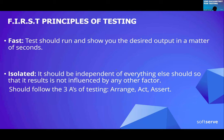Let's take a look at the first principles of testing — there are five. The first is Fast: tests should run and show you the desired output in a matter of seconds. Isolated: it should be independent of everything else, so you know the results are not influenced by any other factor. It should follow the three A's of testing — Arrange, Act, Assert. Arrange means we have our data ready before the test. Act means we test a specific function. And Assert means the result we got should be compared and validated.